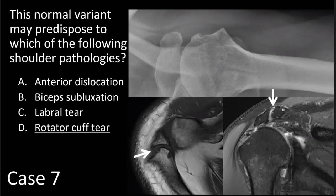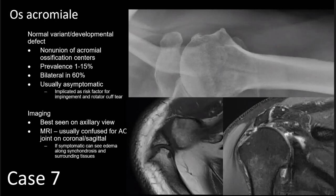This patient has os acromiale — an older patient with degenerative change who also has a full thickness rotator cuff tear on the coronal view. Os acromiale is a normal variant characterized by non-union of the acromial ossification centers. It has a published prevalence ranging between 1% and 15%, is bilateral in 60% of patients, and is usually asymptomatic, although it has been implicated as a risk factor for impingement and rotator cuff tear. It's best seen radiographically on the axillary view, and it's important to closely evaluate axial sequences because it can be confused for the acromioclavicular joint on coronal and sagittal sequences.